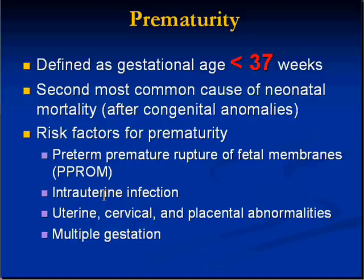If the fetal membranes — amniotic membranes — rupture prematurely, that's PPROM: premature rupture of fetal membranes. That's a sign the baby will be born prematurely regardless of the cause. Generally, intrauterine infections cause prematurity. Anatomic and physiologic anomalies of the uterus and cervix, as well as placental anomalies, are associated with prematurity. And of course, multiple gestation — twins, triplets — generally the more babies in the uterus, the more likely they are to come out early.